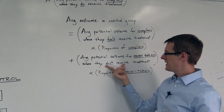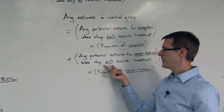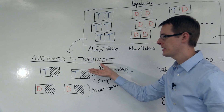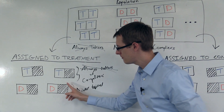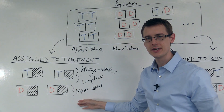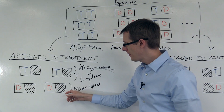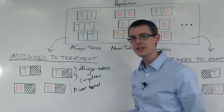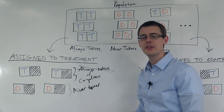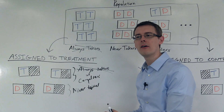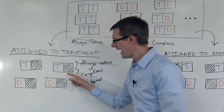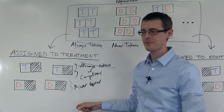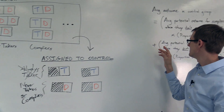What about the average potential outcome for never-takers when they don't receive treatment? I can get that by looking at my assigned-to-treatment group and looking at the average outcome for the people who don't get treated. This is a group of never-takers — a random sample from the population — and they don't get treated. So the outcome I see, their cholesterol, is equal to their potential outcome when they don't get treated. This average is exactly the average potential outcome for never-takers when they're not treated.